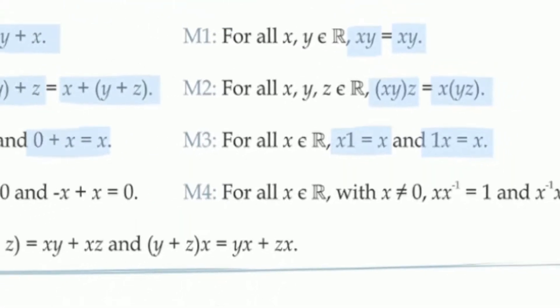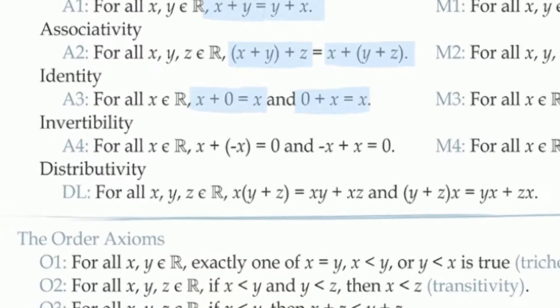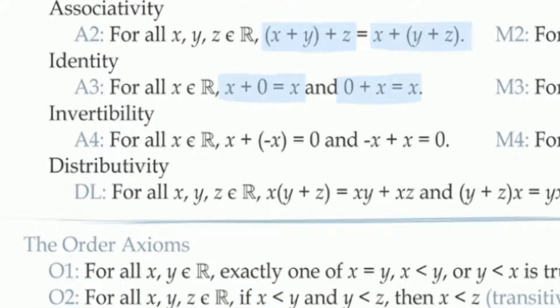And finally, the last pair, axioms A4 and M4, tell us about the behavior of our two unary operations. A4 tells us that the negative of x is the additive inverse of x. This means that if we add x to its negative, it returns the additive identity, 0.